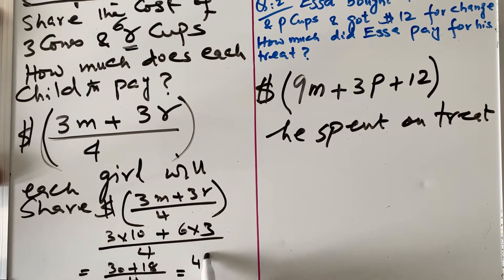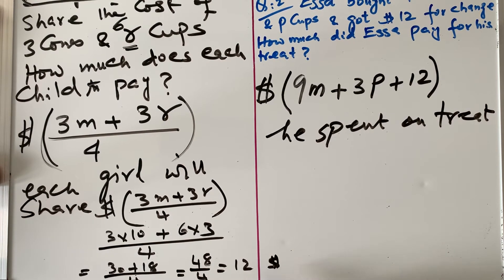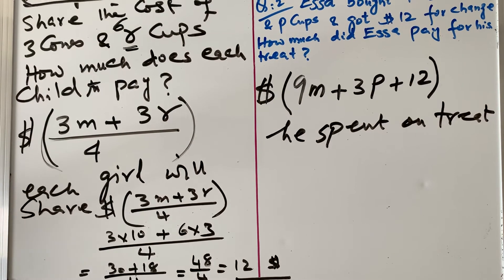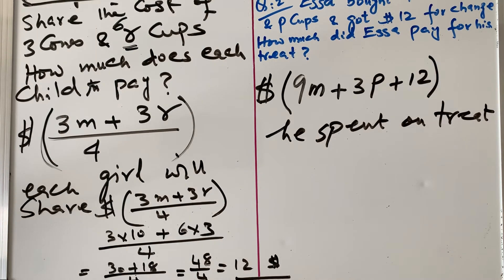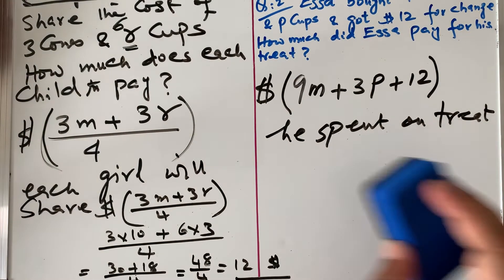That gives us 48 divided by 4, which equals 12 dollars. So each girl pays twelve dollars if they bought three cones at ten dollars each and six cups at three dollars each, and shared the total among four people. This shows how to derive the expression from the statement and then substitute values to get the answer.